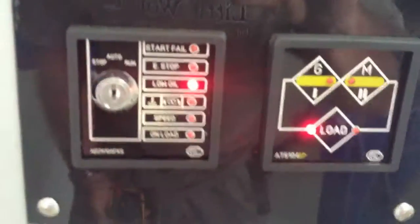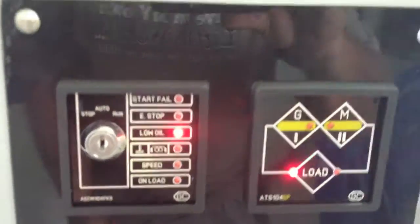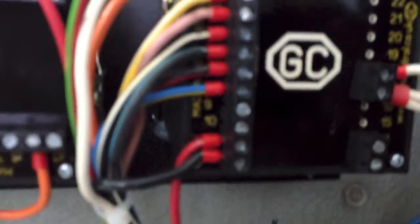I just simulated a low oil pressure fail by shorting out terminals number 3, which is the white and yellow, to ground, which is the blue-yellow. And by doing so, it immediately turned the engine off. Fantastic.